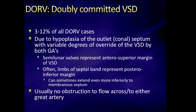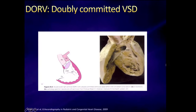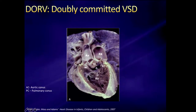Doubly committed VSDs are much less common. They're due to hypoplasia of the outlet or conal septum with variable degrees of override of the VSD. The semilunar valves represent the anterior superior margin of the VSD, and often the limbs of the septal band represent the posterior inferior margin. Usually there's no obstruction to flow across either great artery, but you can have some subpulmonary stenosis. There's a deficiency of any conal septum, a large VSD, really committed to both great arteries — the aorta and pulmonary artery — so you could baffle to either one.